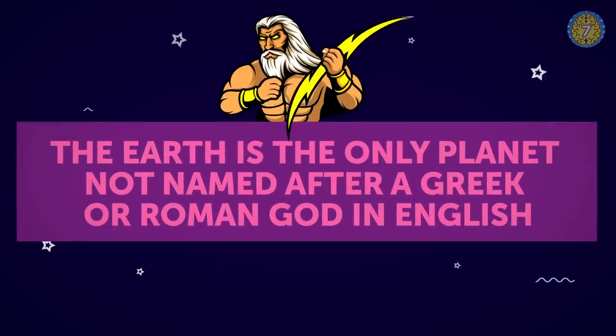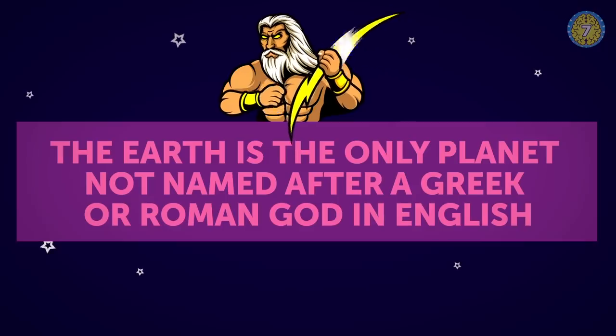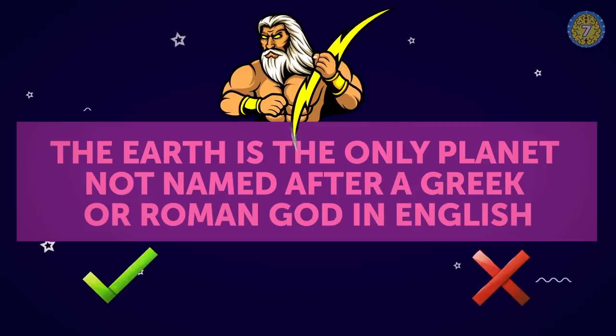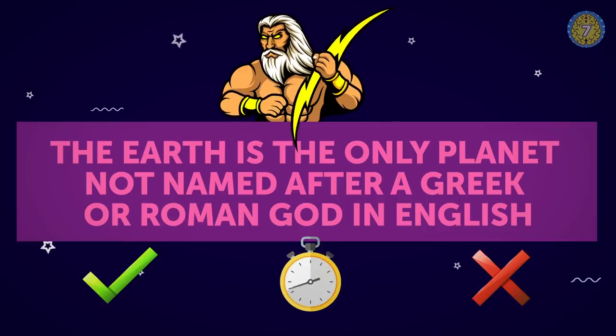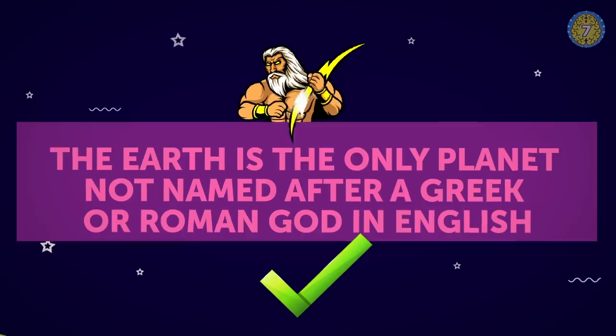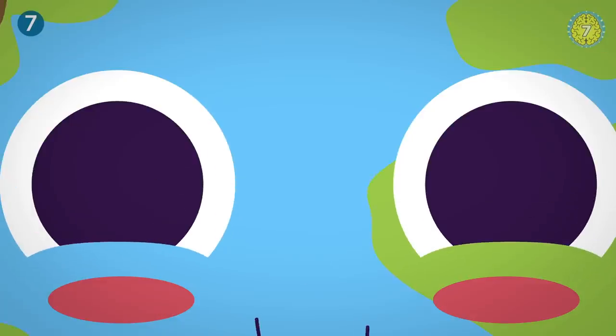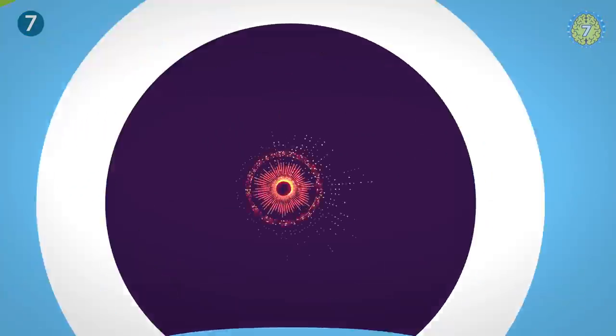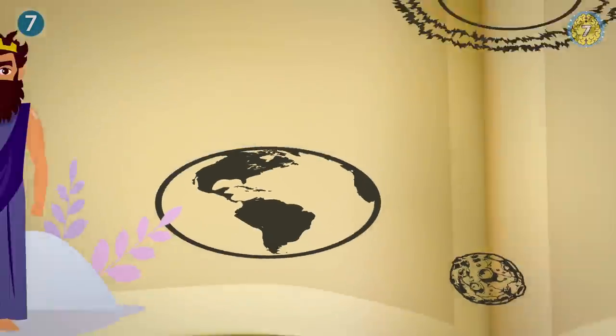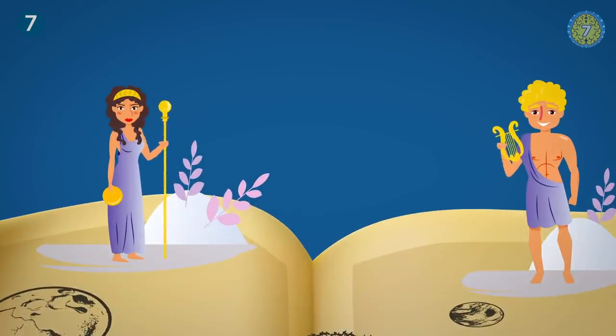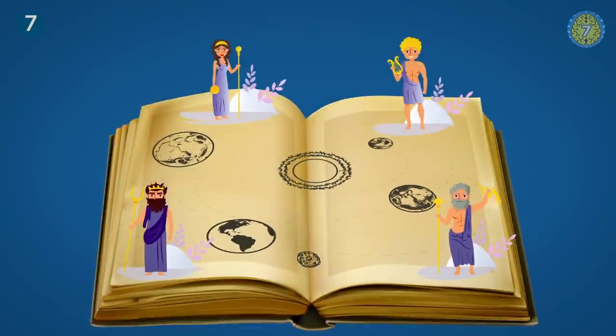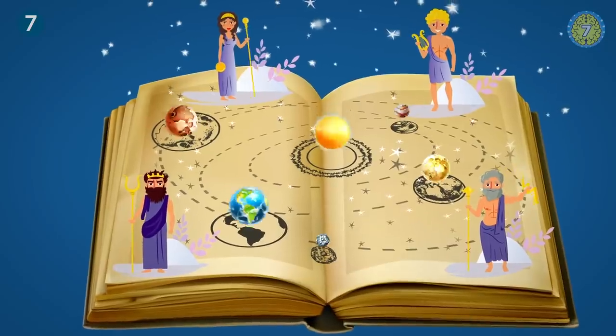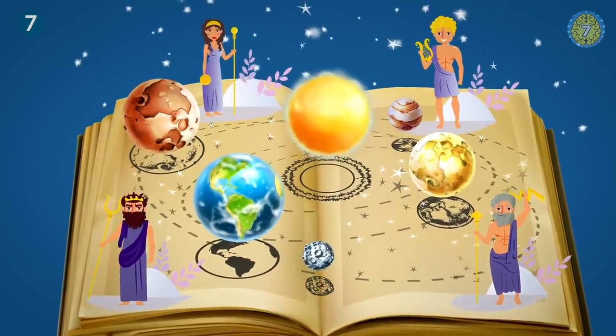The earth is the only planet not named after a Greek or a Roman god in English. So this is another special thing about our beautiful planet. But why? Ancient people like the Greeks, Babylonians, Romans, they gave names to all the planets, but they didn't think that the earth was a planet. That's hilarious!